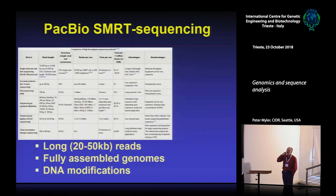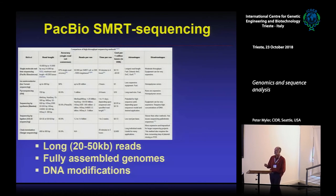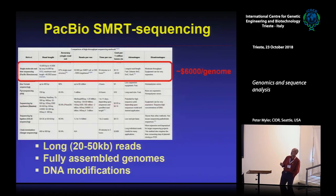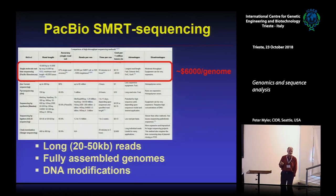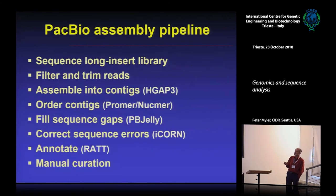I want to spend the rest of this talk on PacBio sequencing, which is relatively new and gets around many disadvantages of Illumina reads. You get long reads that allow full genome assembly, and you can also look for DNA modifications. The disadvantage is it costs about $6,000 to sequence your genome by PacBio. I won't go into detail about how it works as that's not really critical.